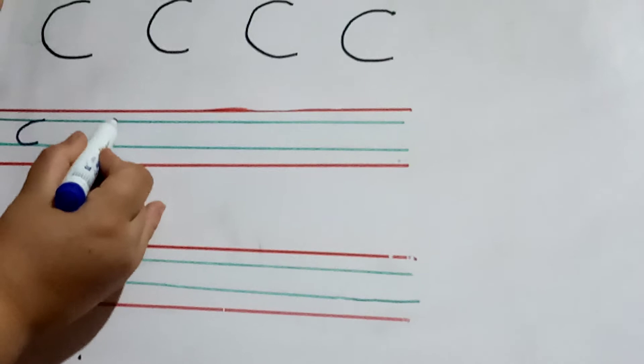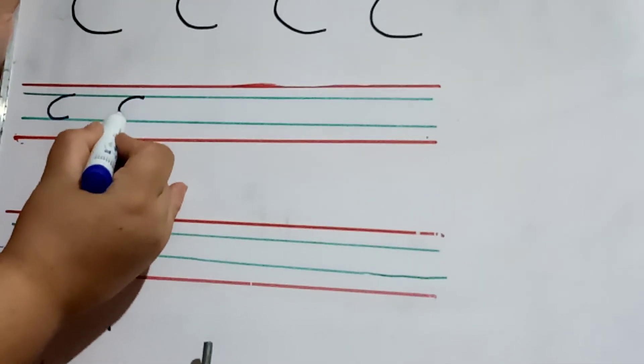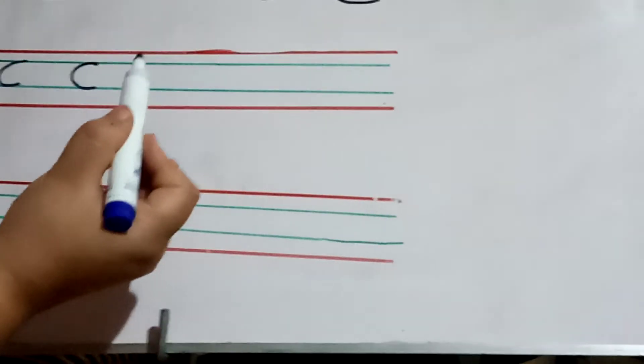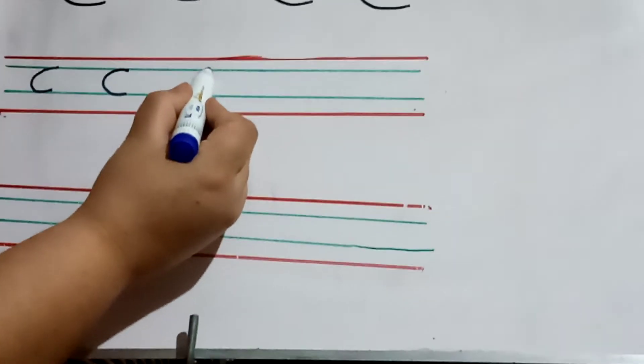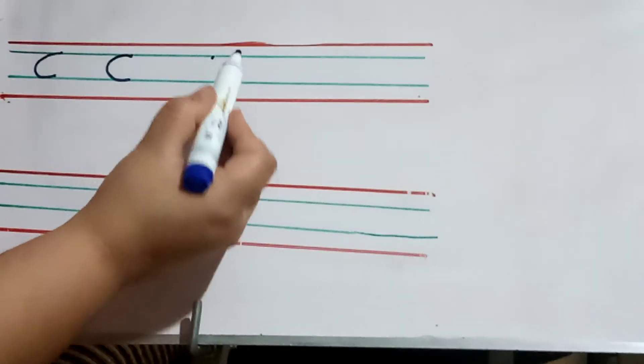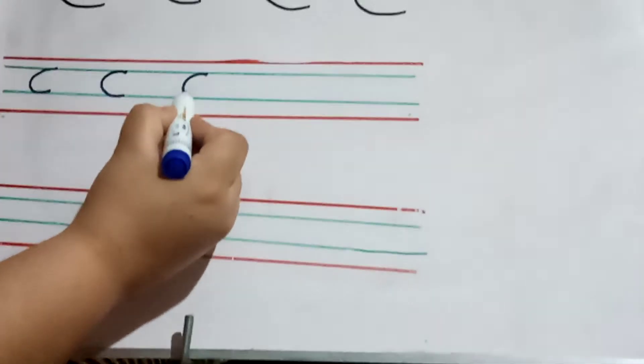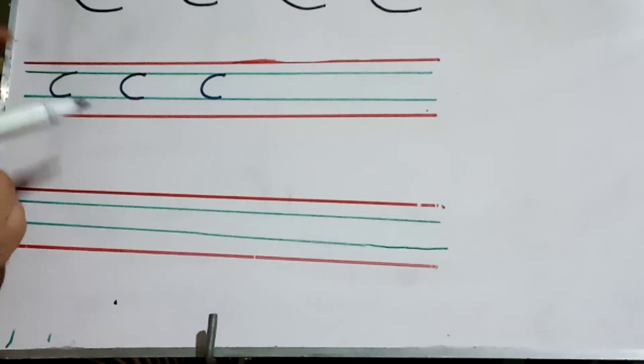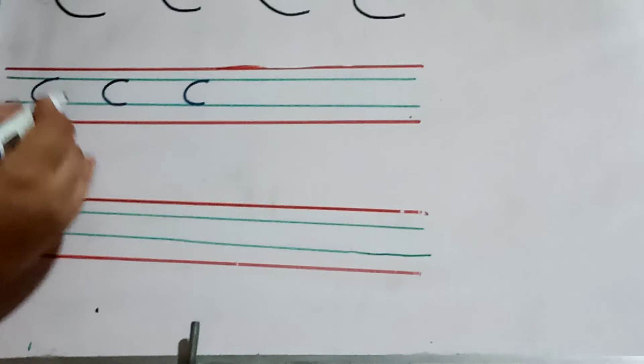Start from the second line, make a curve and stop. Watch my hand movement carefully. Start from here, make a curve, come to the third line and stop. Now look, your C is in between the two lines, middle two lines.